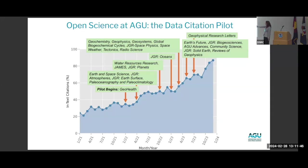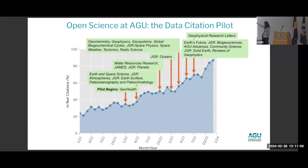Since rolling out the data citation pilot — which provides staff support to help authors — we've seen the number of AGU papers containing a data set citation more than double, from under 40% in 2021 to almost 90% of our articles now containing a link to the data underlying the research publication. We think this is so important for the practice of science.